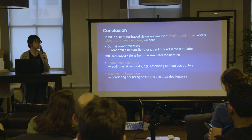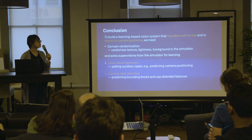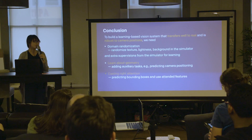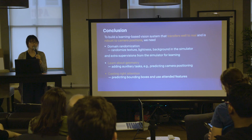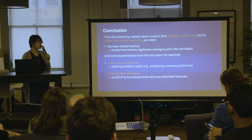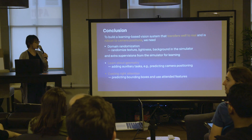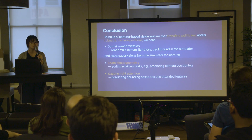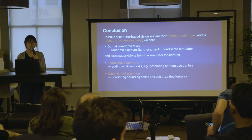In conclusion, we propose a learning-based vision system that is robust to camera position changes and transfers well to the real setting. Beyond domain randomization of textures, lighting, and background, we show that extracting more supervision from the simulator helps. Specifically, enforcing geometry learning via an auxiliary camera pose prediction task and forcing correct attention via bounding box prediction and attended features both improve performance.